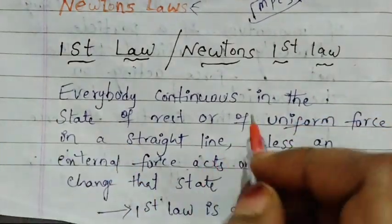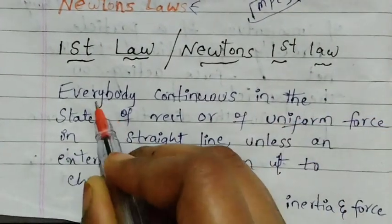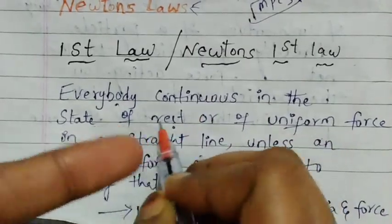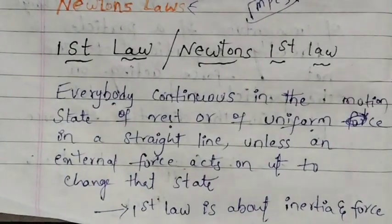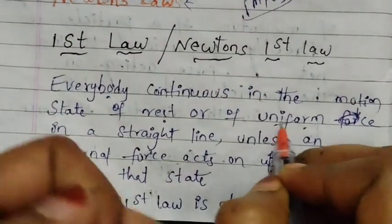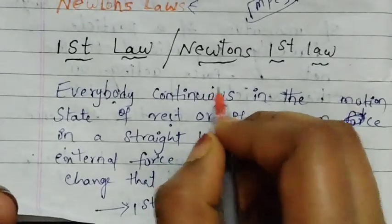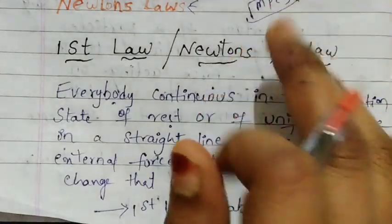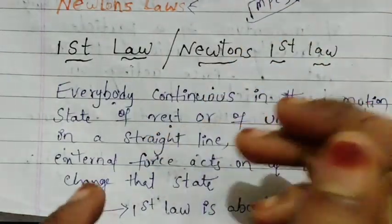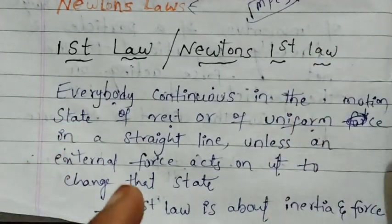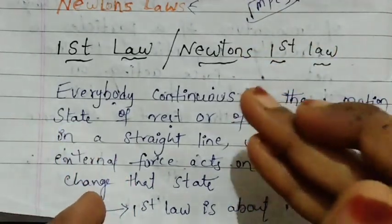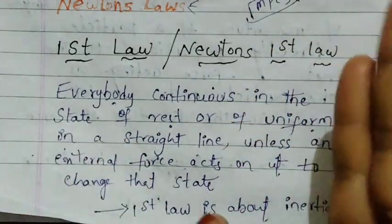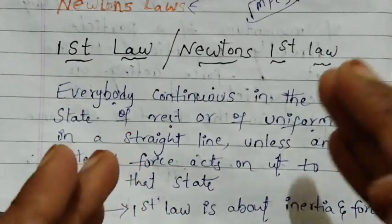There are many points in the first law. The key idea is that a body at rest stays at rest, and a body in motion continues in motion. If you are in a state of rest — for example, you are watching videos on your phone — you will continue to do that unless something acts on you.